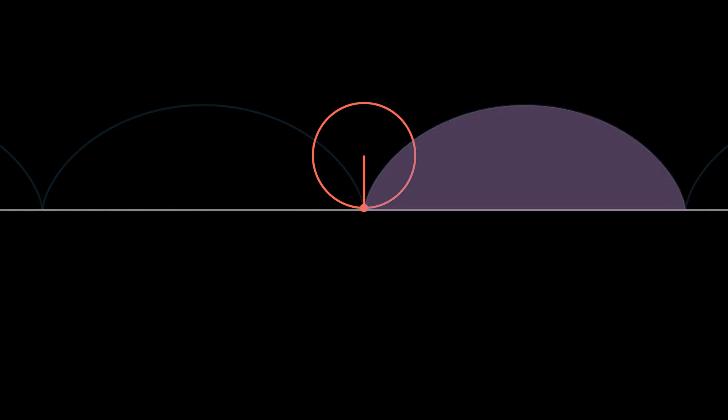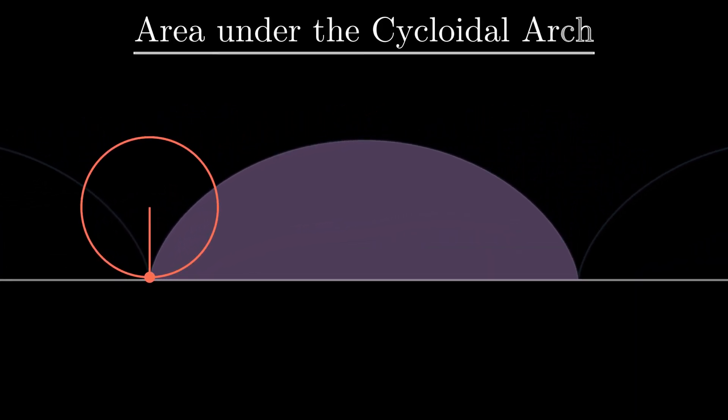One of the first questions we can ask ourselves about a cycloid is the area spanned by one of its arches.